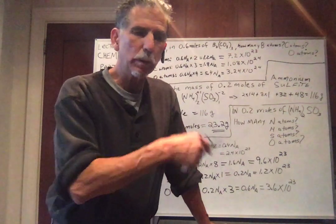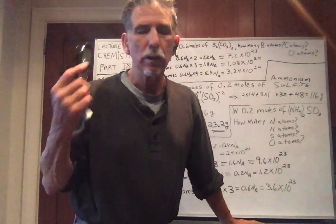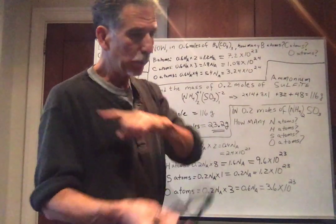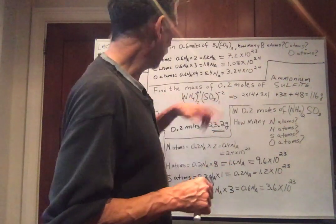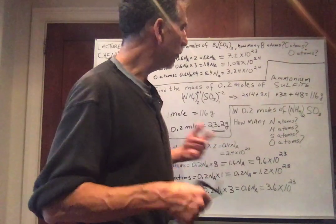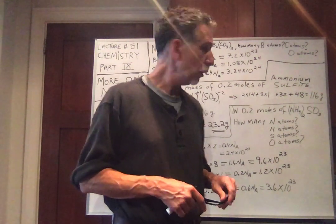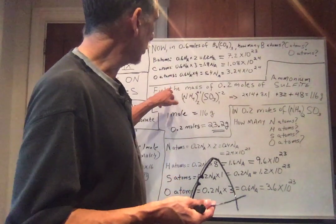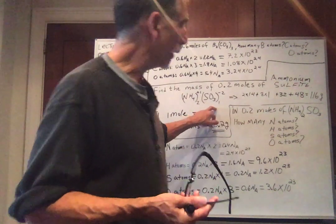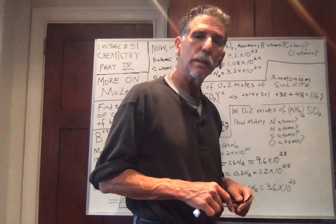So this is pretty much what I'll ask on moles, one of these types of questions. I can ask, what's the mass of 0.6 moles? Or I can say, 40 grams of boron carbonate is how many moles? So we can work backwards. And the same here. I could say, if I have 100 grams of ammonium sulfite, how many moles is that? Well, you find out the mass of 1 mole and you divide that into 100 and that will tell you how many moles. So if I have 500 grams of ammonium sulfite, how many moles is that? Well, 1 mole was 116. So 500 grams is almost 5 moles. Does everybody understand? You see that?